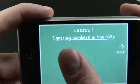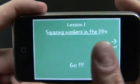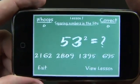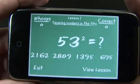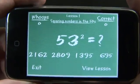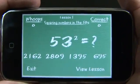So for example, here in lesson one, we're learning to square numbers in the 50s. So 53 squared, now I have no idea what 53 squared is off the top of my head, but after I make my way through this lesson, I will know.